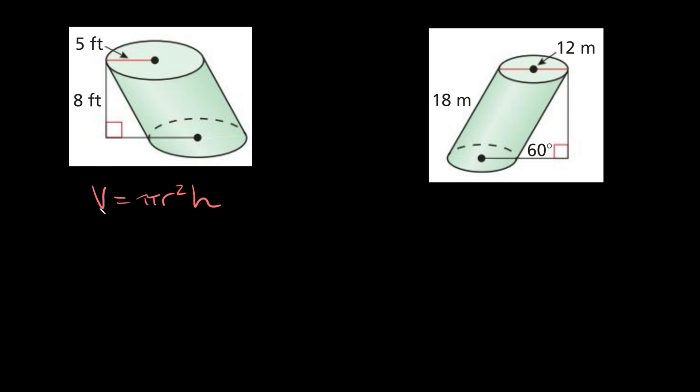So here we can say that the volume is going to be equal to pi times the radius, and the radius is given right here as 5 feet. So we're going to plug in a 5 right there, and that's squared, and then we're going to multiply that by the height, and the height right here is given as 8 feet.